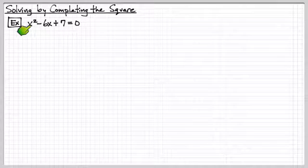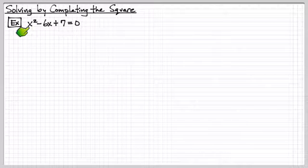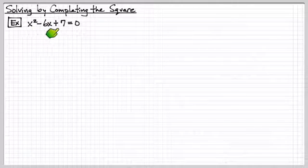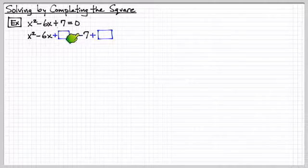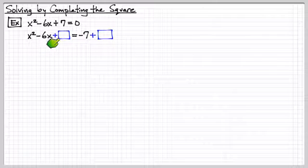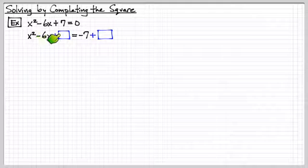Okay, this is how we apply it to solving a problem like this. Remember, this was not factorable, and we don't have a nice perfect square here. So let's do the following. Let's move the seven to the other side for now, we don't need it on this side. Let's figure out what to put in here to create a perfect square.